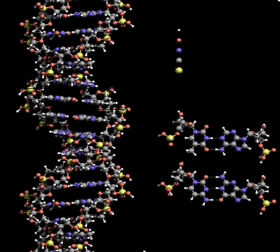Deoxyribonucleic acid is a molecule composed of two chains that coil around each other to form a double helix, carrying the genetic instructions used in the growth, development, functioning and reproduction of all known living organisms and many viruses.